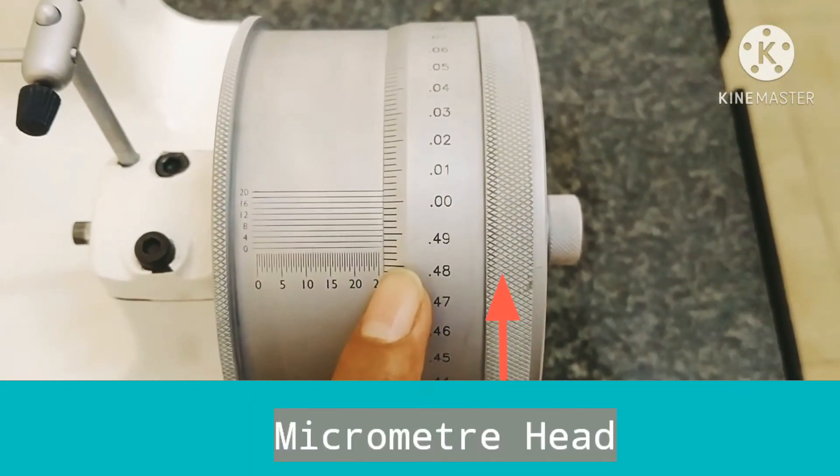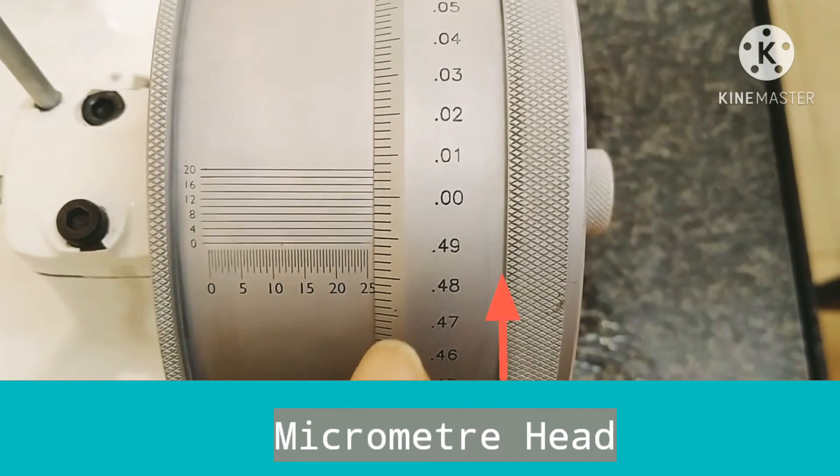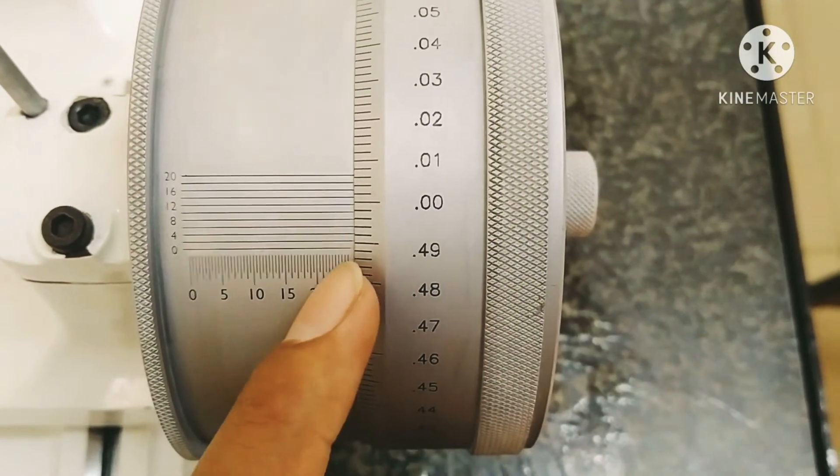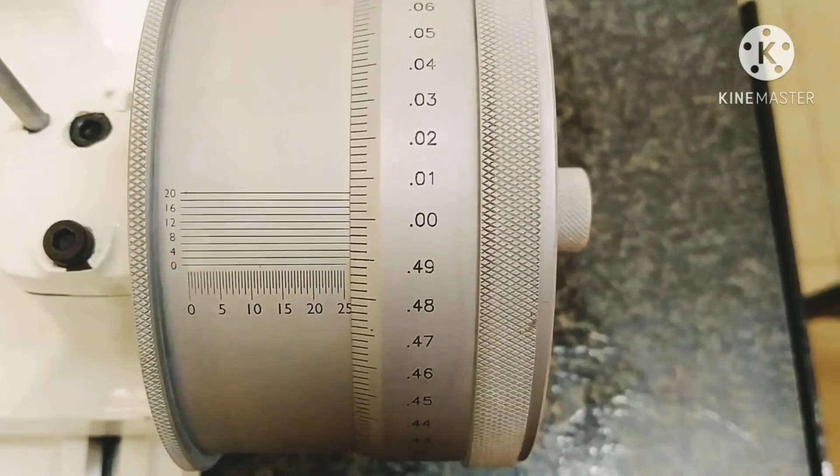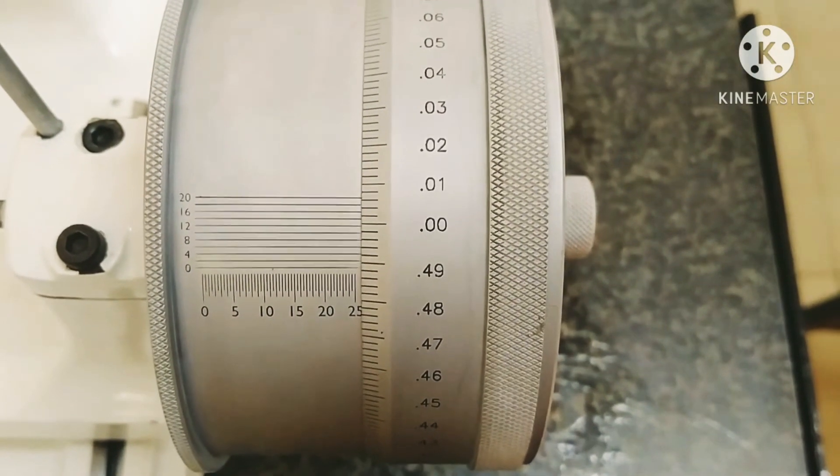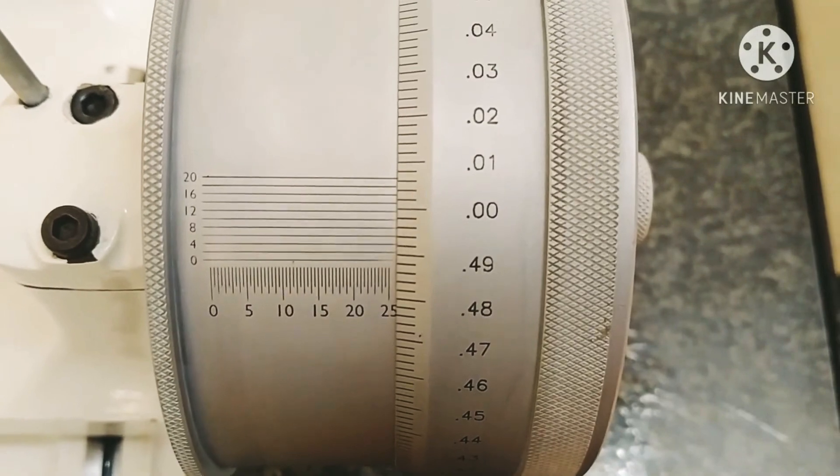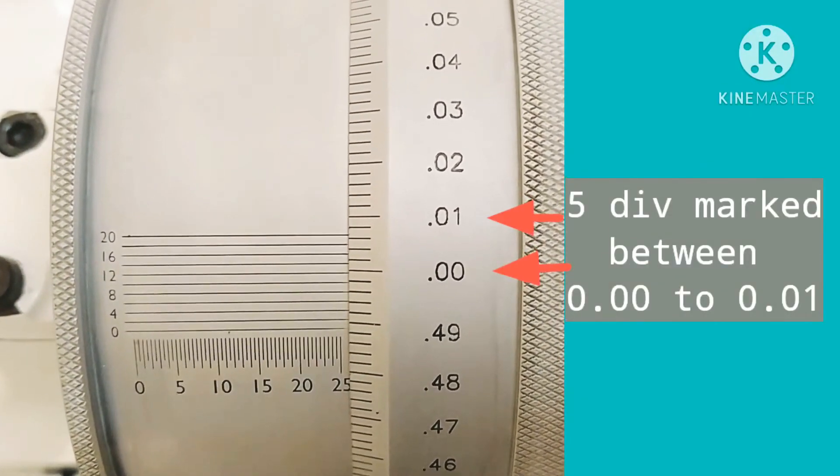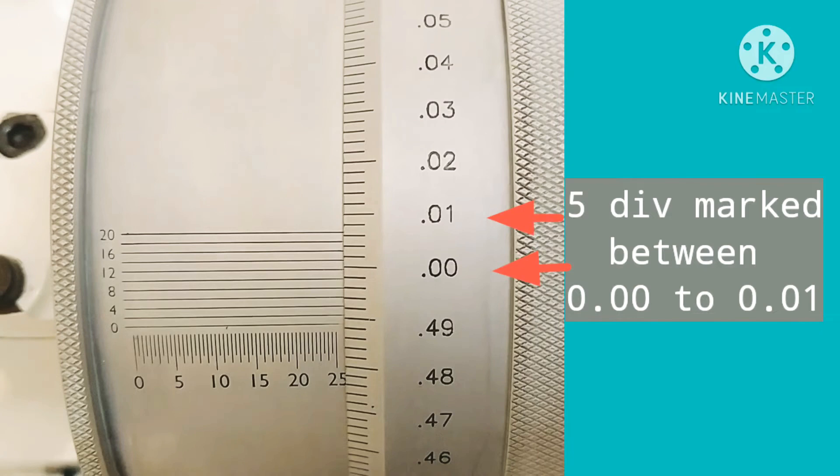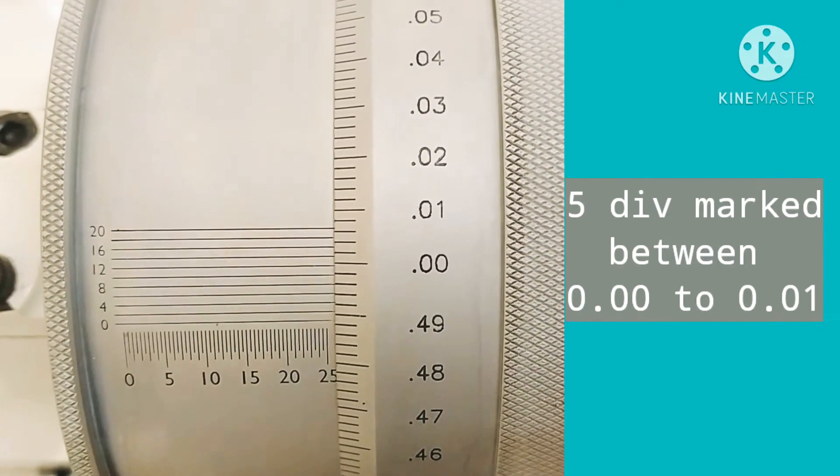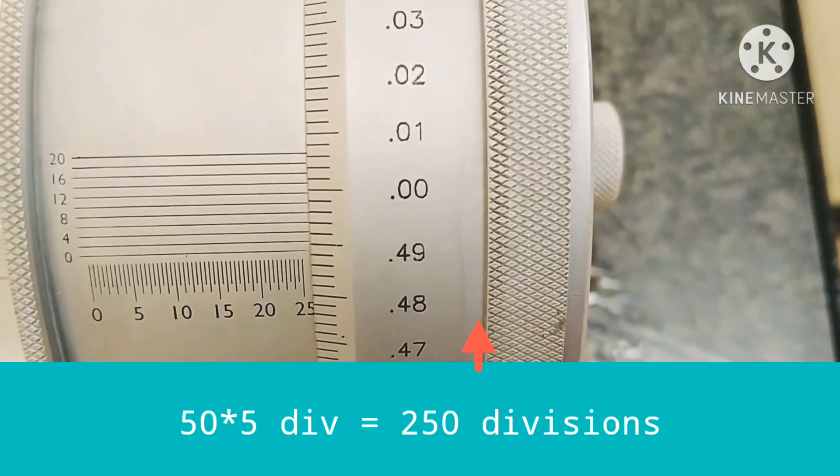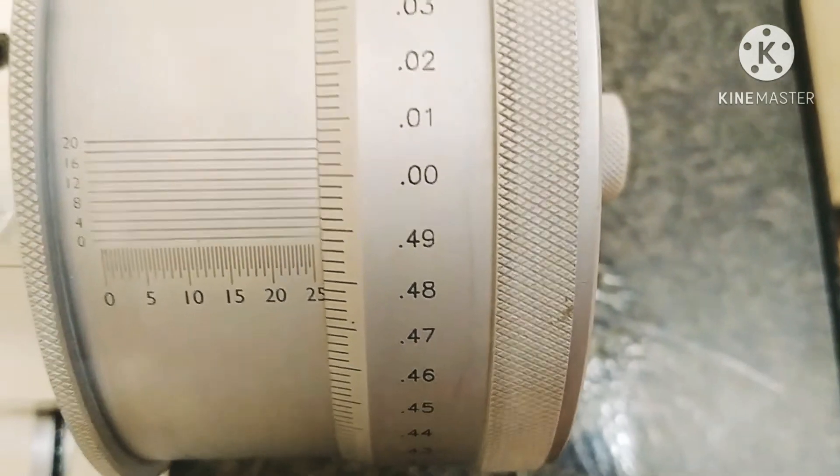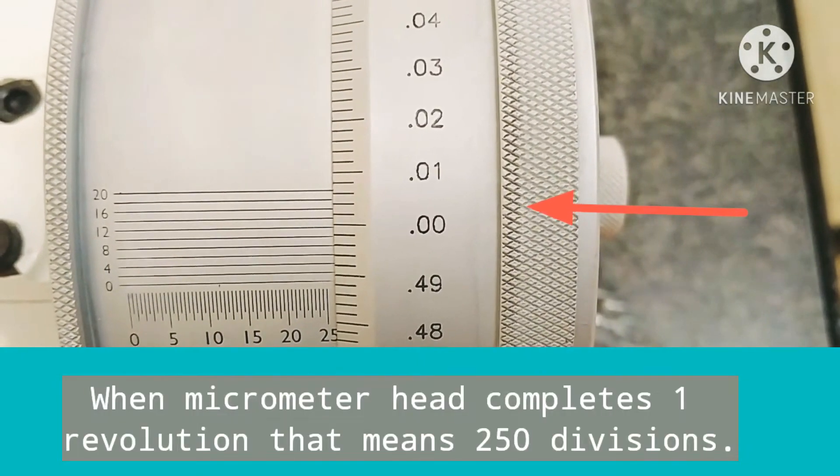This is the micrometer head. Here you can see there are total 50 points marked, such as 0.00, 0.01, 0.02 to 0.49 and 0.50. Now let's see - there are total five divisions marked between 0.00 to 0.01. So 50 times 5 becomes 250 divisions. When the micrometer head completes one complete revolution, it will rotate through 250 divisions.